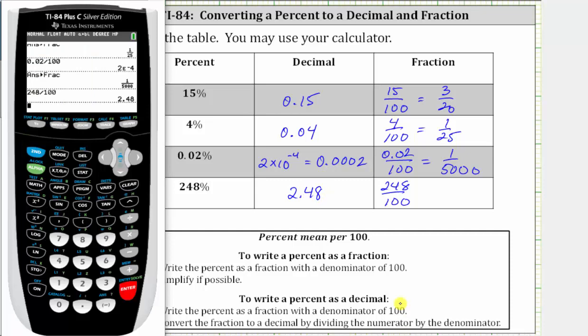To find the simplified fraction, once again we press math, enter, enter, which gives us 62 25ths.